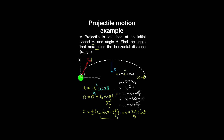The range is maximized when sin 2 theta equals 1, meaning theta equals pi over 4, or 45 degrees.